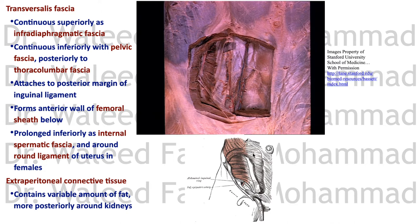Around the opening in the external oblique — the superficial ring — and the deep ring of the transversus abdominis, the transversalis fascia continues around the testis as it descends from inside to outside, forming a sleeve of internal spermatic fascia. We will study this with the spermatic cord. In females, instead of the spermatic cord, it sends a sleeve around the round ligament of the uterus.